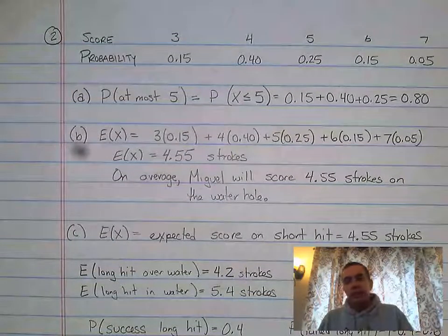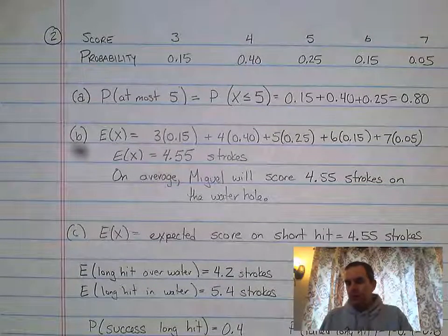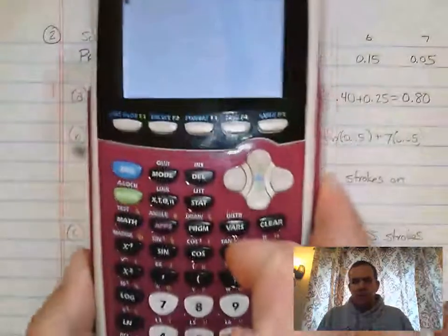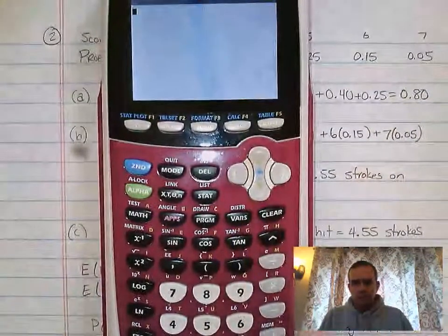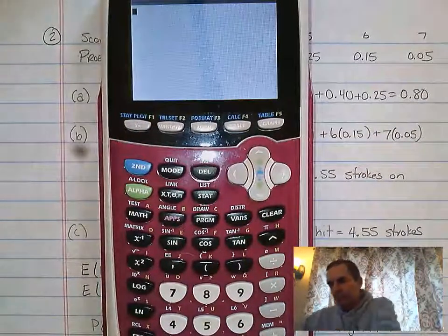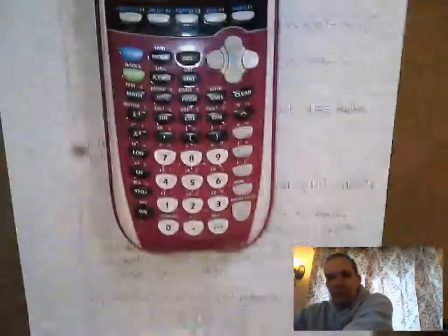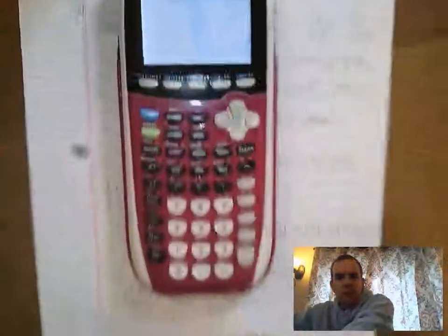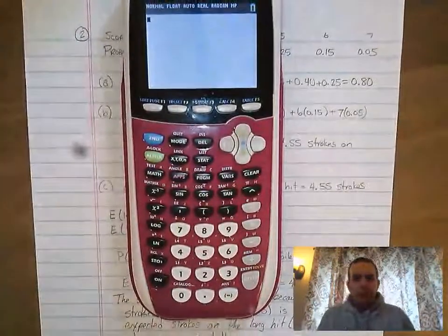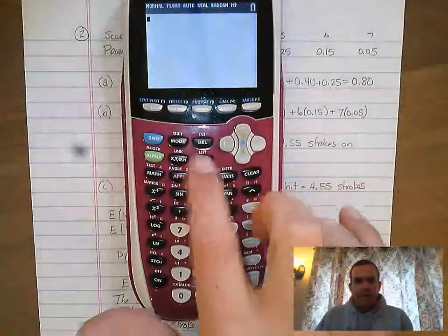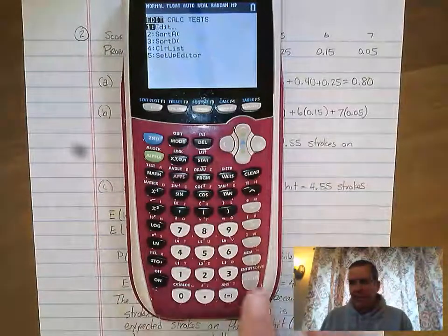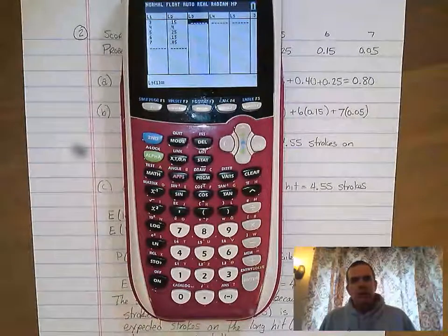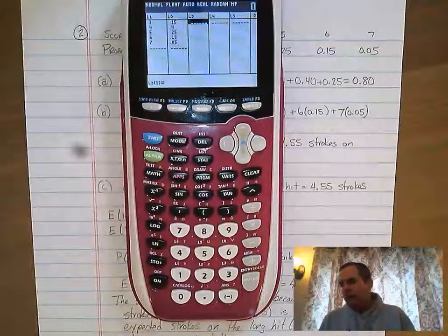But what I want to do is show you how you do it on the calculator. So what you are going to do is you are going to go to stat edit. So what I'm going to do is I'm going to raise the camera a little bit just so I can see a little bit more of the calculator. So you want to go to stat, you want to do edit, enter. And what you're going to do is you're going to go ahead and you're going to put the outcomes in L1.